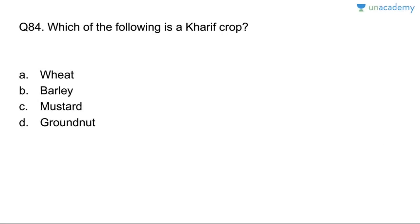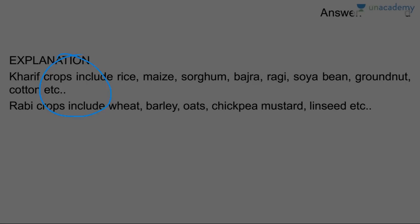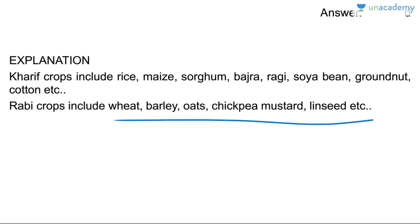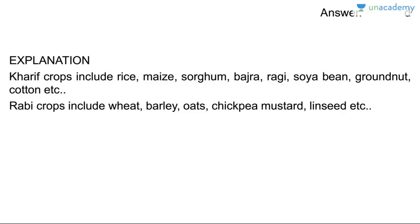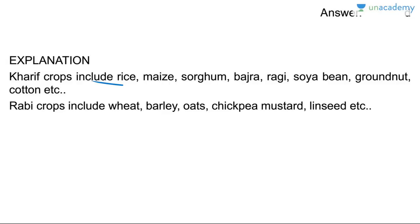Question eighty-four: which is a Kharif crop? Groundnut. Wheat, mustard, and barley are Rabi crops. Rabi crops include wheat, barley, oats, chickpea, mustard, and linseed. Kharif crops include rice, maize, sorghum, bajra — sown around October and harvested in March/April. Kharif crops require the heat period. Answer is D, groundnut is Kharif.